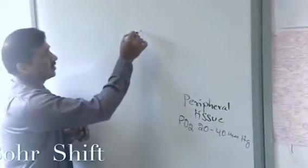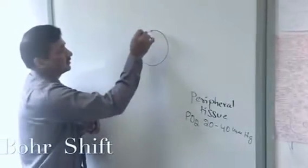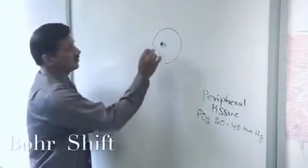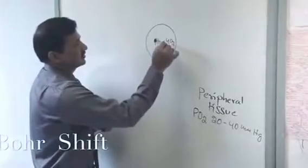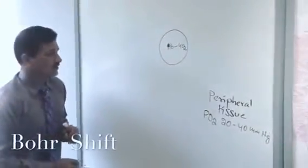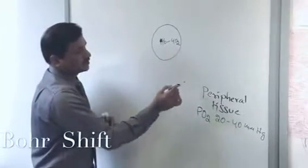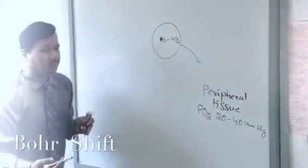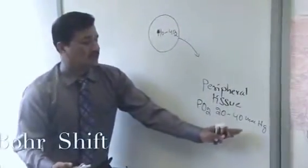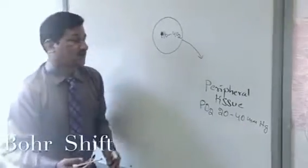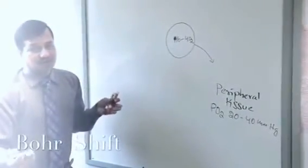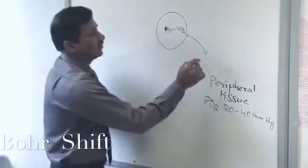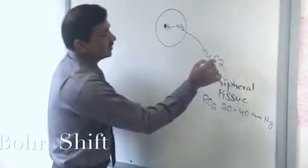Here is a red blood cell carrying a hemoglobin molecule. Hemoglobin carries 4 oxygen molecules. As it reaches the peripheral tissue, it's going to release these 4 oxygen molecules. Generally it releases 2 oxygen molecules whenever the partial pressure of oxygen is around 20 to 40 mmHg — that is basically half desaturation occurs.